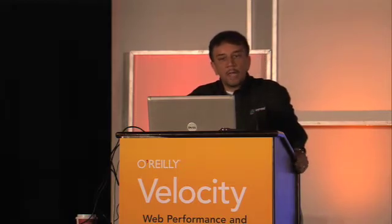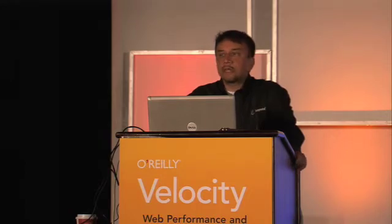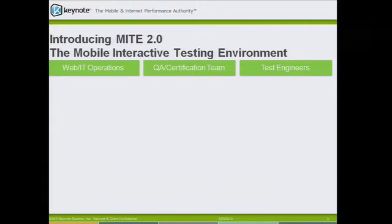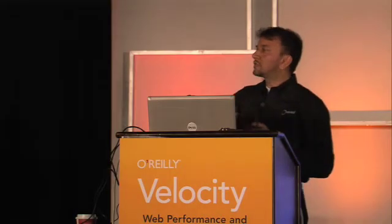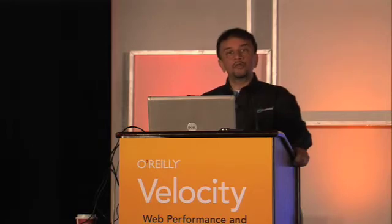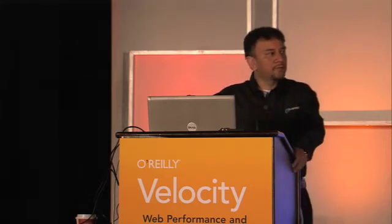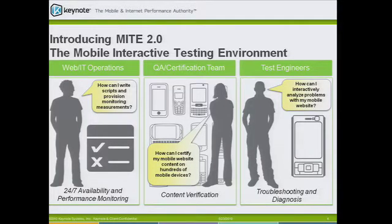We believe we have at least one answer to help you address these challenges of testing and monitoring the mobile web, and that's MITE 2.0. This is a free product. Two years ago we introduced a product called Kite, and we've given tens of thousands of those away to improve the web experience. Now we're doing this with MITE — a very powerful, downloadable tool you install on your desktop, designed from the ground up for mobile. With it, you can automate testing and verification of mobile content across thousands of mobile device profiles, and connect to real devices across our infrastructure for remote tests. It's designed for web IT operations teams, QA, content certification groups, and test engineers.